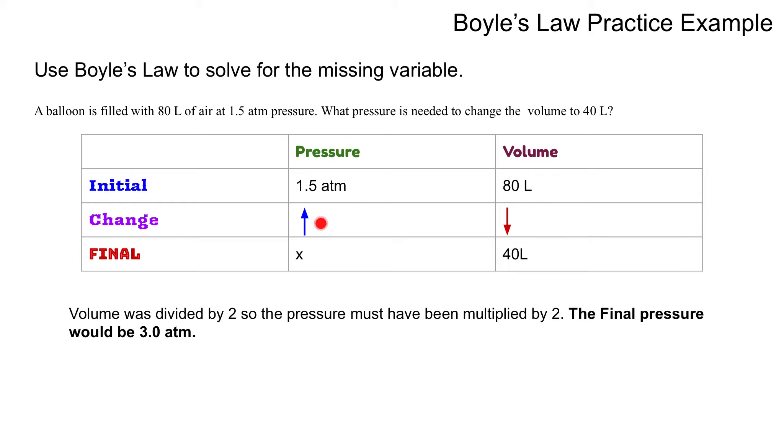So, what happened? I increased my pressure, or I'm sorry, I decreased my volume. By decreasing my volume, because I went to 40 liters, I know that I have to increase my pressure some amount. So, what did I decrease my volume by? My volume was divided by 2. So, the pressure must have been multiplied by 2. The final pressure would be 3 ATM.